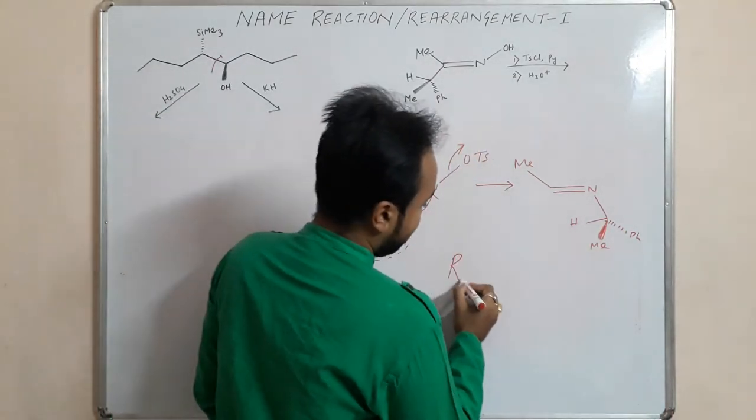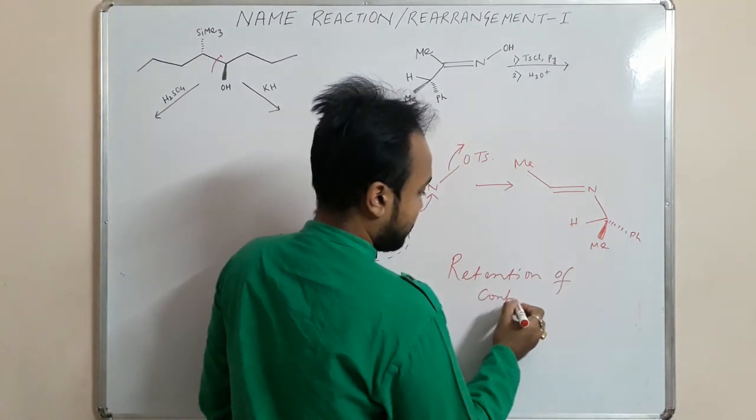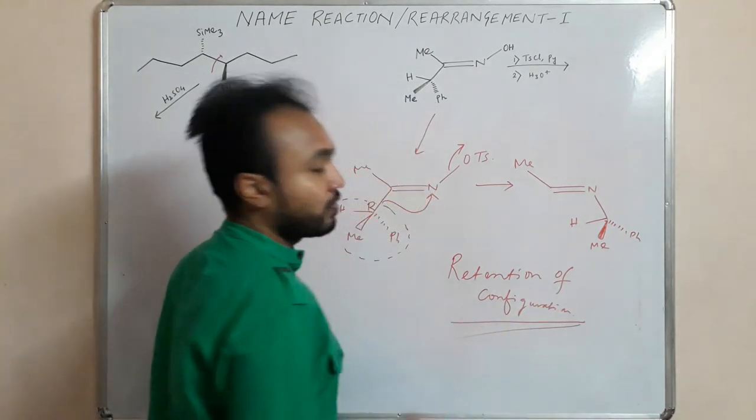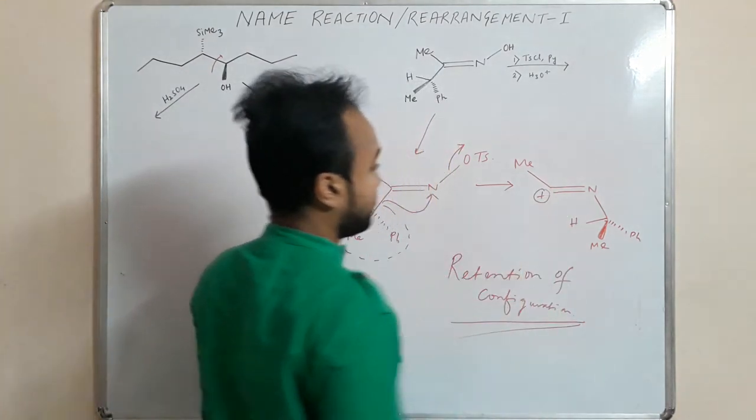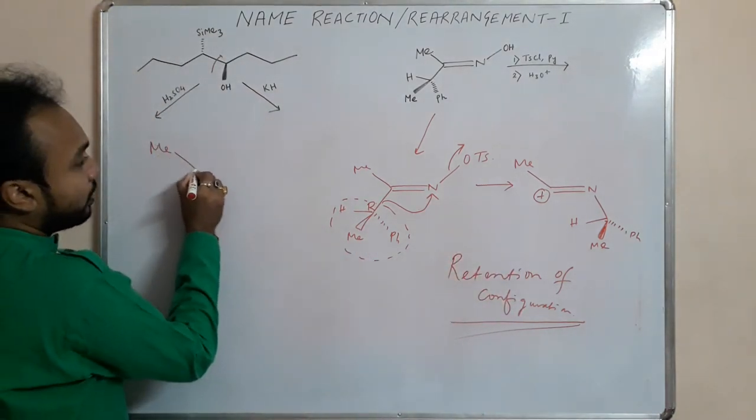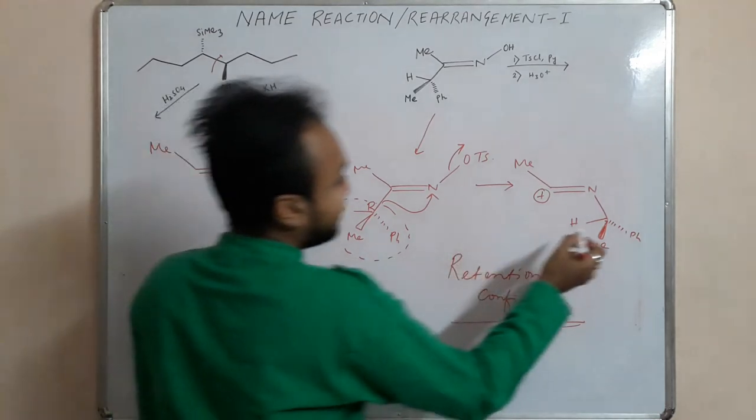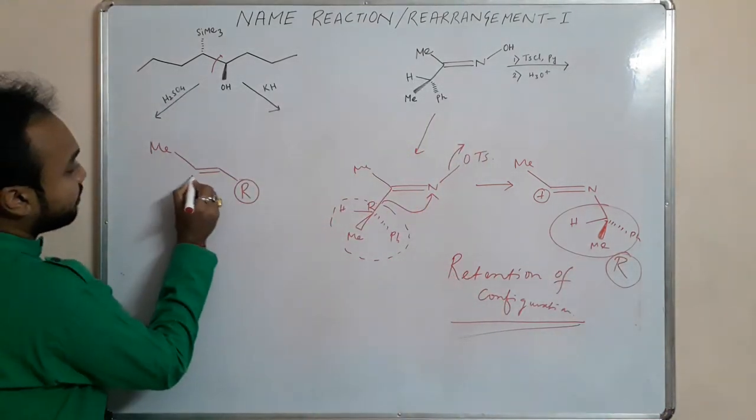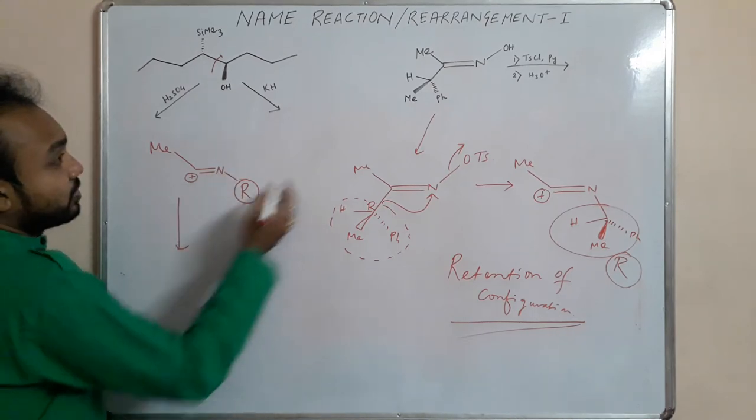Retention of configuration: any types of rearrangement reaction, always there is a retention of configuration. As it migrates, there is a generation of positive charge. I am drawing it over here. We have this R group, and here we have the N atom with a positive charge.